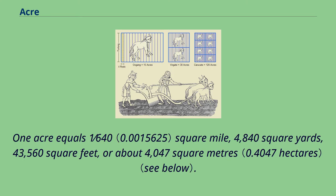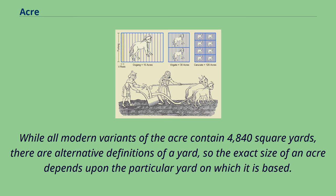One acre equals 1/640th of a square mile, 4,840 square yards, 43,560 square feet, or about 4,047 square meters. While all modern variants of the acre contain 4,840 square yards, there are alternative definitions of a yard, so the exact size of an acre depends upon the particular yard on which it is based.